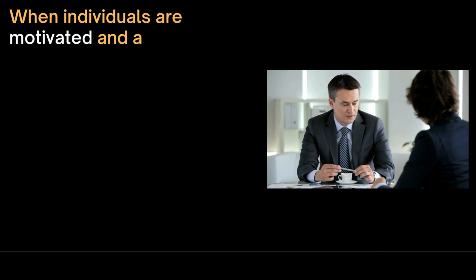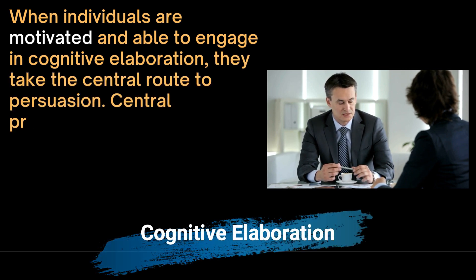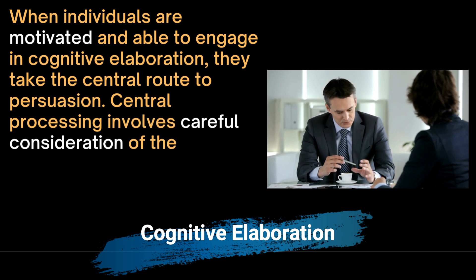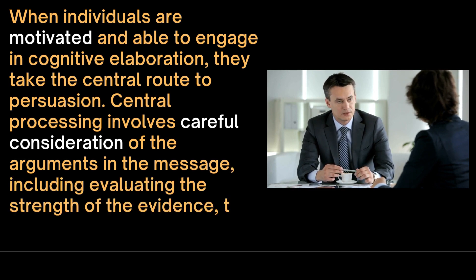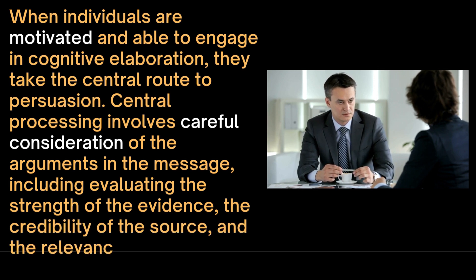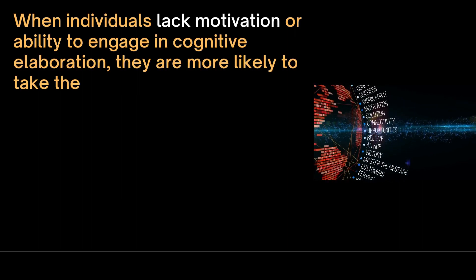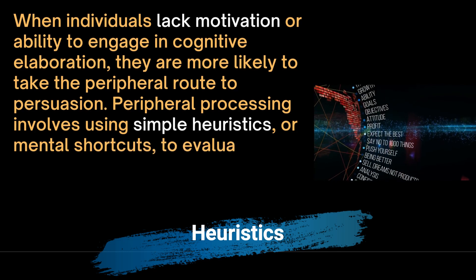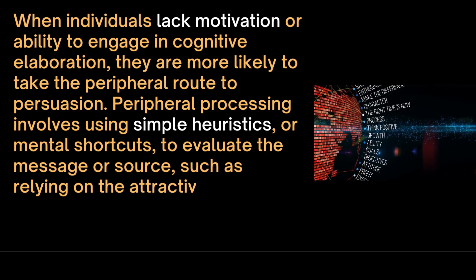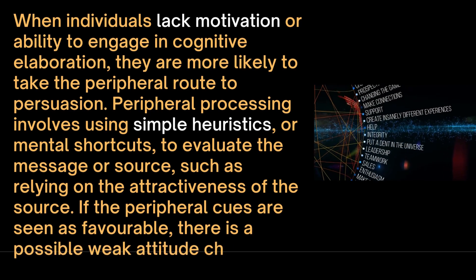When individuals are motivated and able to engage in cognitive elaboration, they take the Central Route to Persuasion. Central processing involves careful consideration of the arguments in the message, including evaluating the strength of the evidence, the credibility of the source, and the relevance of the message. When individuals lack motivation or ability to engage in cognitive elaboration, they are more likely to take the Peripheral Route to Persuasion. Peripheral processing involves using simple heuristics or mental shortcuts to evaluate the message or source, such as relying on the attractiveness of the source. If the peripheral cues are seen as favorable, there is a possible weak attitude change.